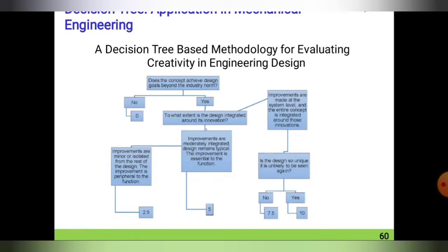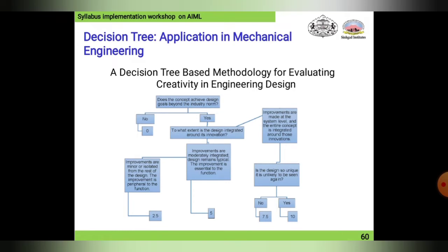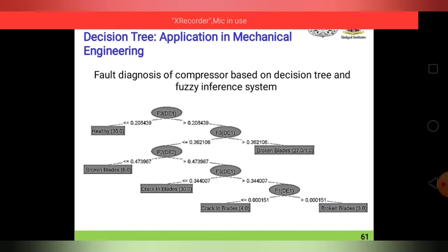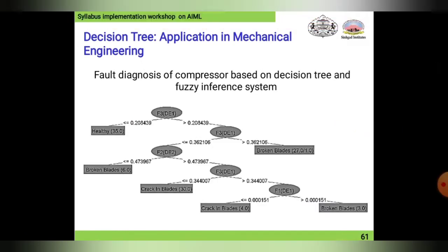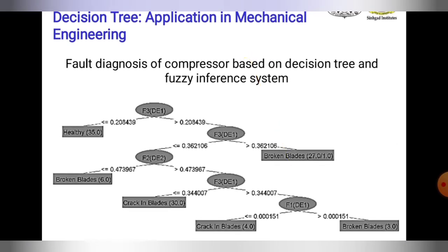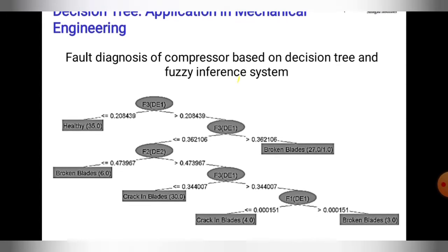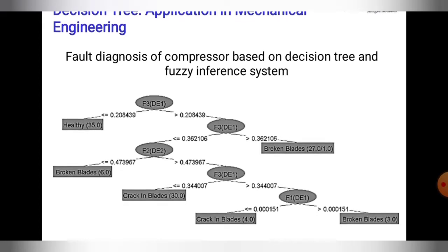The decision tree application in mechanical engineering is also used for fault diagnosis of a compressor based on a decision tree and fuzzy inference system. Values are given — for example, feature F3, node D1: if it is a healthy compressor, a value of 0.35 is given. If the compressor is not healthy, a value less than 0.20 is assigned.